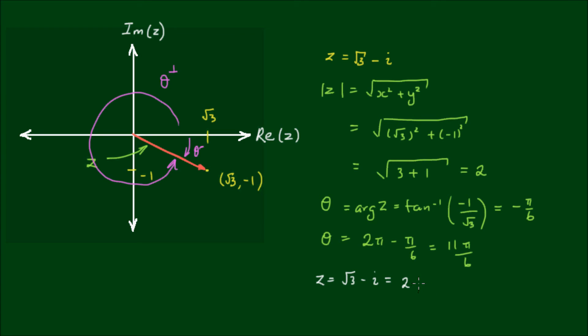So finally the complex number z equals root 3 minus i can be written as 2 cis negative π on 6.